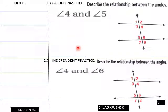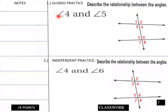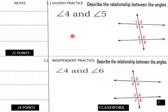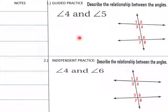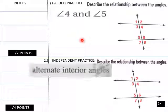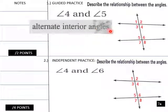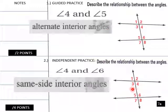Now I've got practice here — students, this is yours. Describe these two angles and their relationship. For angles 4 and 5, these are alternate interior angles. Angle 4 and angle 5 are alternate interiors. And then angles 4 and 6 are same side interior angles.